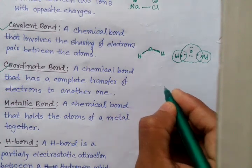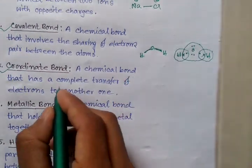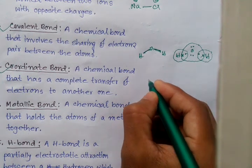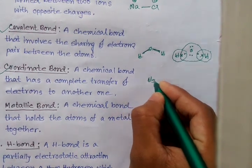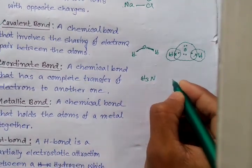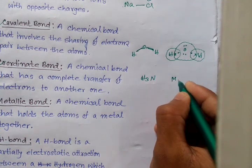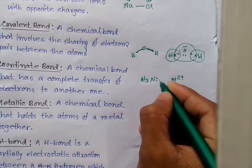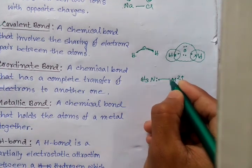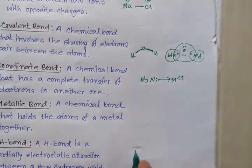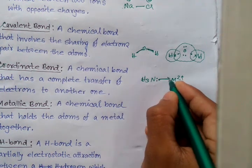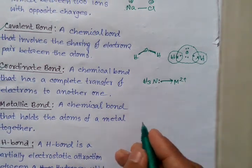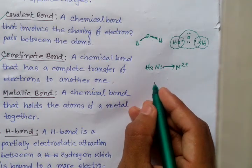A coordinate bond is a chemical bond where there is a complete transfer of an electron pair from one atom to another. For example, in NH3, the lone pair of nitrogen is donated to another atom — this bond is called a coordinate bond.